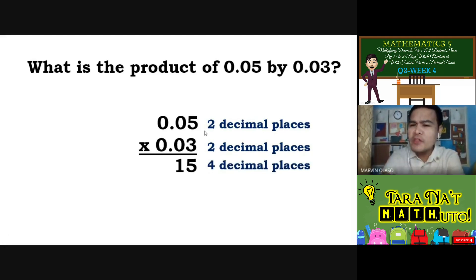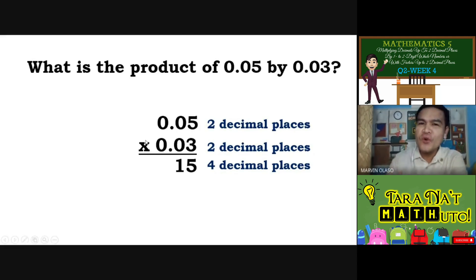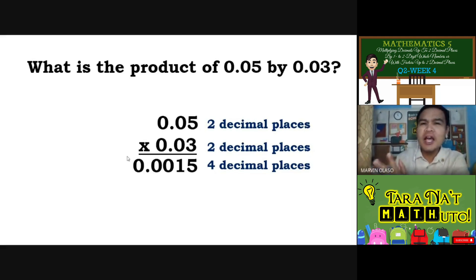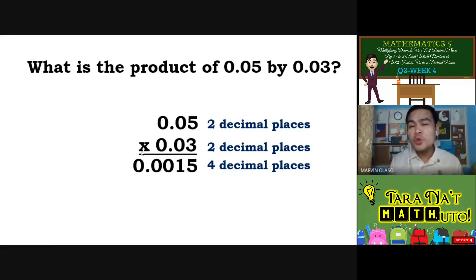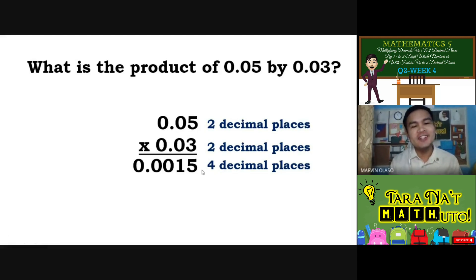The problem is: the answer is only 2 digits — how do you make 4 decimal places? Don't forget — when you have fewer digits than decimal places needed, you add leading zeros. So from left: 1, 2, 3, 4 — to make it 4 decimal places, add two zeros before 15. Since there is no whole number, put zero. So we have: 0.0015 — that is fifteen ten-thousandths.